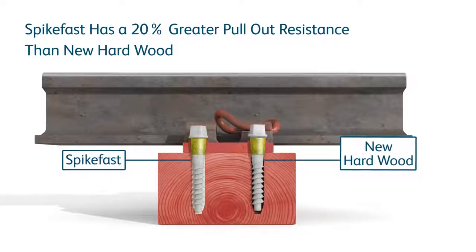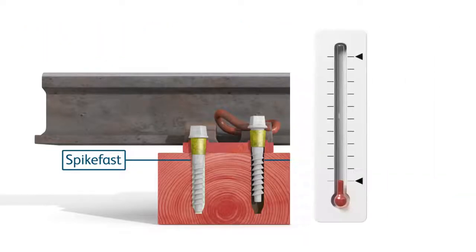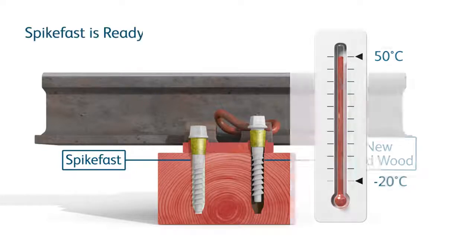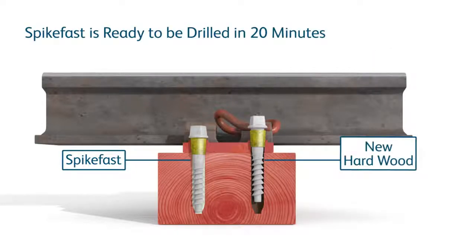SpikeFast has a pullout resistance 20% greater than new hardwood and can be applied in temperatures ranging from minus 20 degrees C to 50 degrees C and in wet weather. It is ready to be drilled within 20 minutes, allowing a quick return to service.